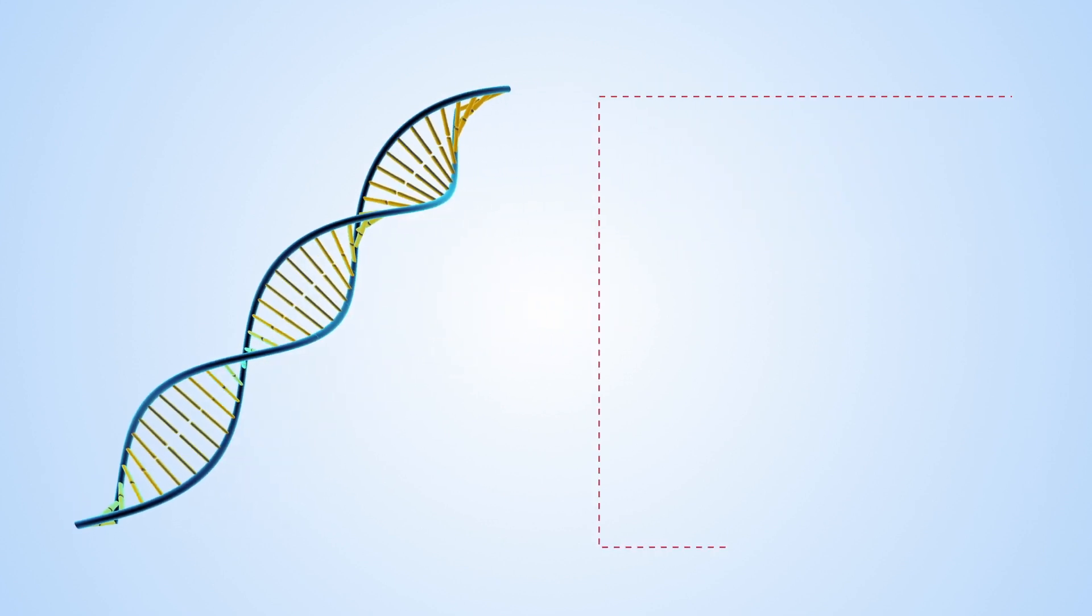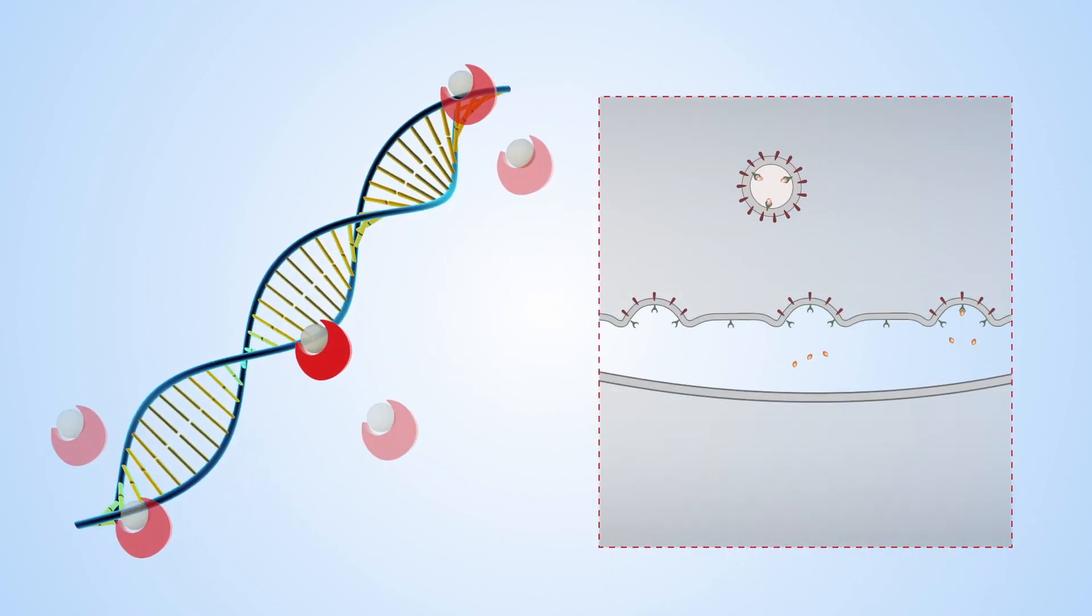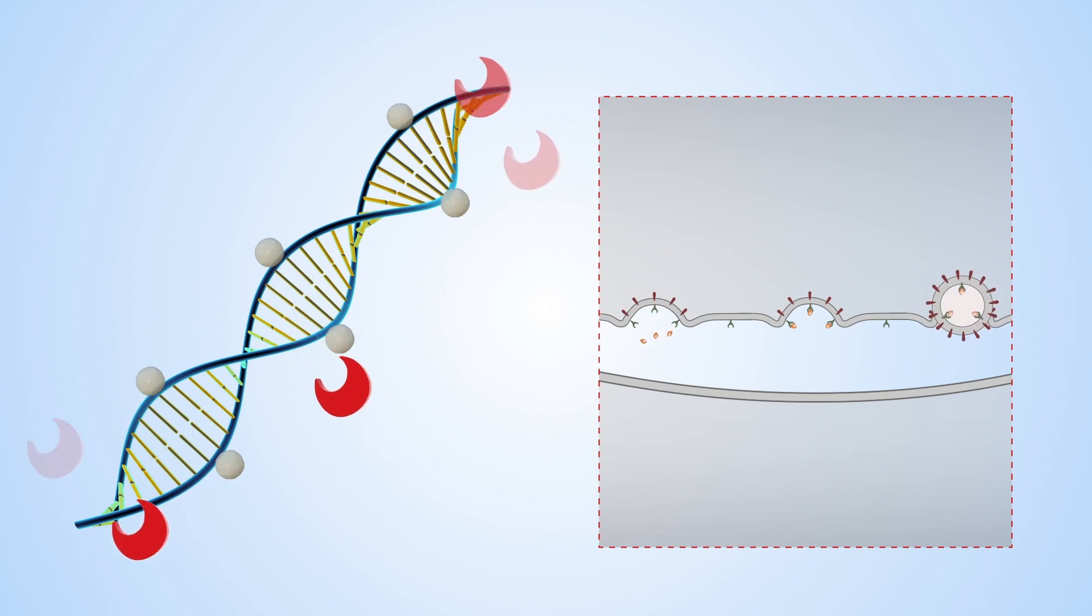DNA methylation, catalyzed by DNMT1, restricts clathrin-mediated endocytosis at presynapses and reduces GABAergic transmission.